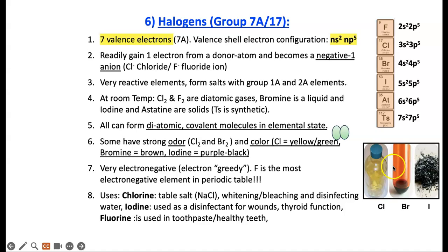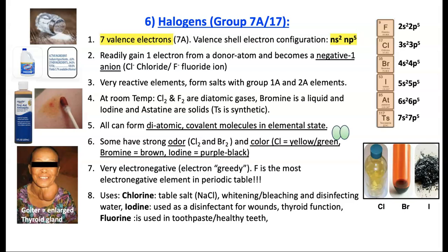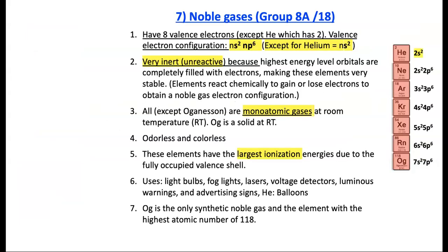Let's look at their uses. Here is chlorine, bromine, and iodine. Chlorine is used in table salt, and so is sodium. Chlorine is used for whitening, bleaching, and disinfection. It's required for thyroid function. If you don't get enough iodine, you get this enlarged thyroid gland, which we call a goiter. We use fluoride for healthy teeth and toothpaste. It's also added in your municipality water.